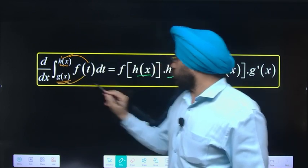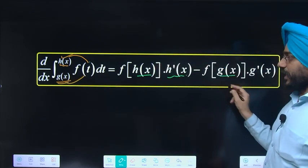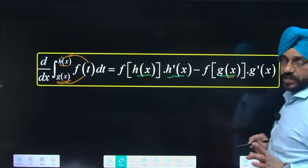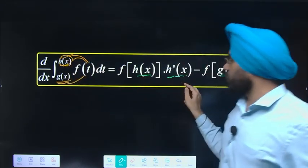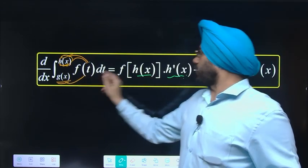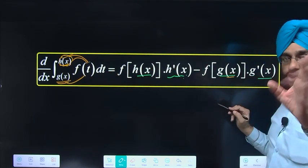Then g(x) put, f(g(x)), then g(x) differentiation g'(x). Differentiation of integral term: upper value put, then differentiation of this part, then lower value put, then differentiation of lower part.